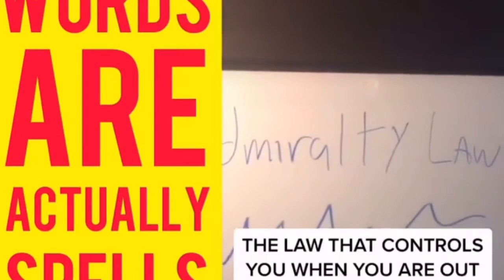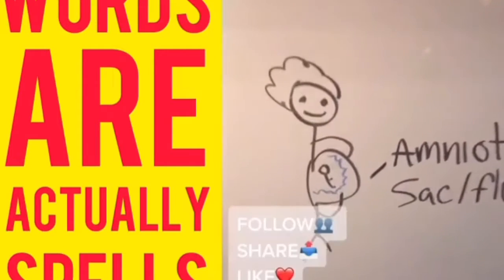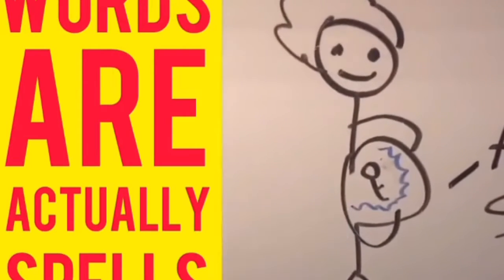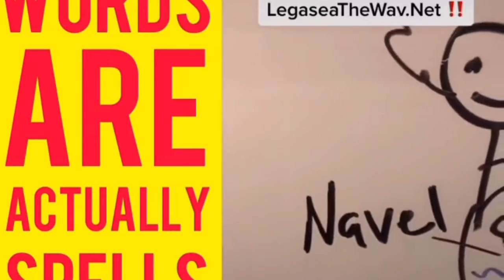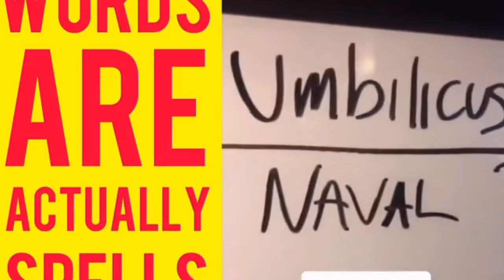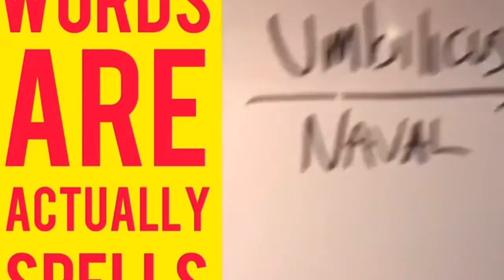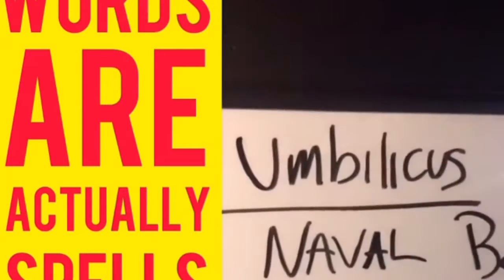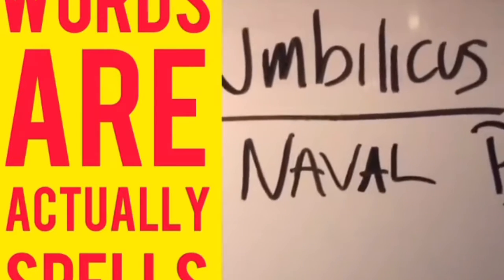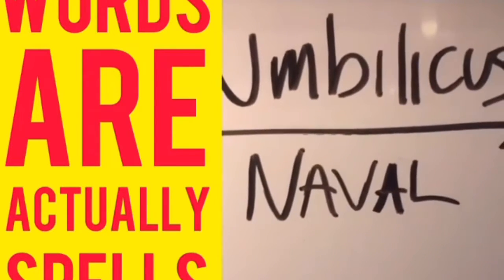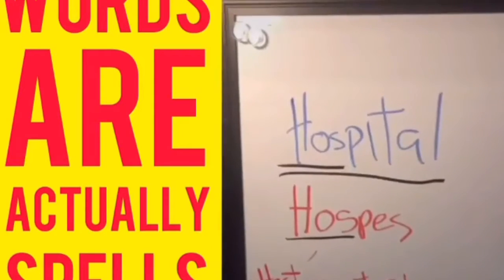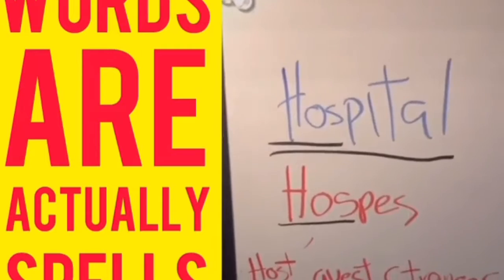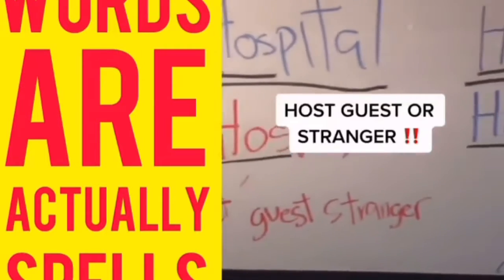When babies are born, the law is the law of water. Since you were born in the amniotic sac, which was filled with water, technically you were born on water. Your umbilical cord is connected to your navel, and another version of navel is naval with an A, like naval base. The word umbilical in Latin translates to umbilicus and means navel. The word navel means referring to the navel or ships. The word hospital is derived from the word hospice, meaning host, guest, or stranger.